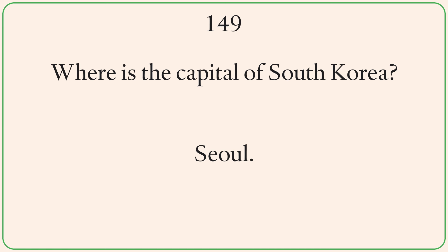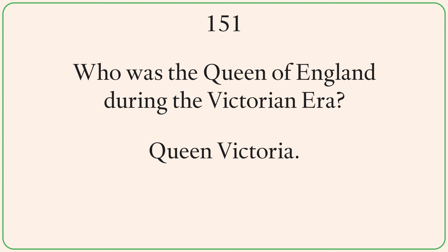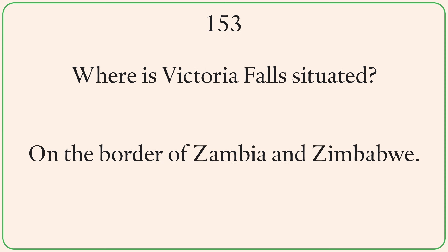Where is the capital of South Korea? Seoul. Where are the Galapagos Islands? In the Pacific Ocean, part of Ecuador. Who was the Queen of England during the Victorian era? Queen Victoria. Where is the Kremlin located? In Moscow, Russia. Where is Victoria Falls situated? On the border of Zambia and Zimbabwe.